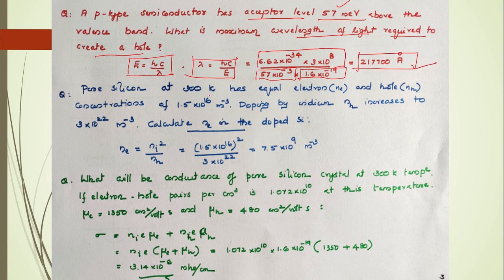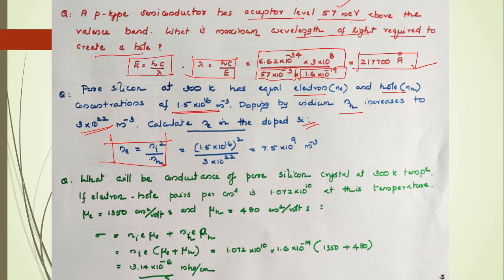Problem 2: Pure silicon at 300 K has equal electron and hole concentrations of 1.5×10¹⁶. After doping, n_h increases to 3×10²² per meter cube. Calculate n_e in the doped silicon. Using the law of mass action: n_e × n_h = n_i², we get n_e = n_i² / n_h. Substituting values gives the answer.